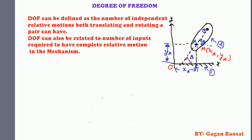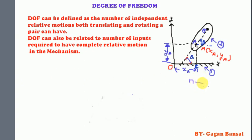Thus link two is completely specified by three variables: x_A, y_A, and theta. In other words, it can be stated that an unconstrained rigid link in the plane has three degrees of freedom. That means if there are n links in a mechanism, it will have 3n degrees of freedom before joining their ends.